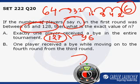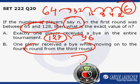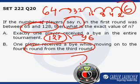Statement B says one player received a bye while moving from the third round to the fourth round. However, we do not have data on whether any other player received any more byes in other rounds — from round 1 to 2, round 2 to 3, or round 4 to 5. So there could be many byes or just one; that data is not available. Statement B alone is again insufficient.